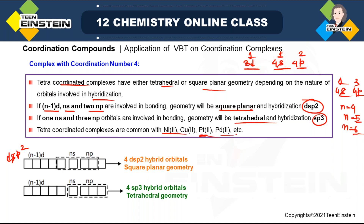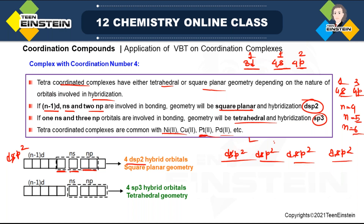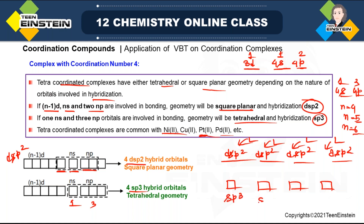For dsp² hybridization using n−1 d: combining one (n−1)d, one ns, and two np gives four new dsp² hybrid orbitals with square planar geometry. These four dsp² orbitals are vacant and ligands donate electrons into them. For sp³: taking 1s and 3p gives four new sp³ orbitals with directional nature — the ligands donate electrons into these vacant sp³ orbitals. It is not that CO donates directly to pure s or pure p; it donates to the new hybrid orbitals.